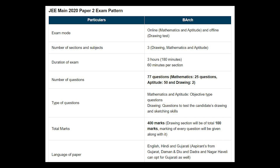The three sections are mathematics, aptitude, and drawing. Duration of the exam is 3 hours, which you can divide as roughly 60 minutes per section. The total number of questions is 77 — mathematics has 25 questions, aptitude has 50 questions, and drawing has 2 questions. Mathematics and aptitude are objective type questions, while drawing questions test the candidate's drawing and sketching skills. Total marks are 400, with the drawing section worth 100 marks. The paper is available in English, Hindi, and Gujarati.